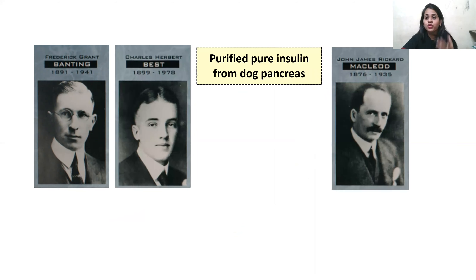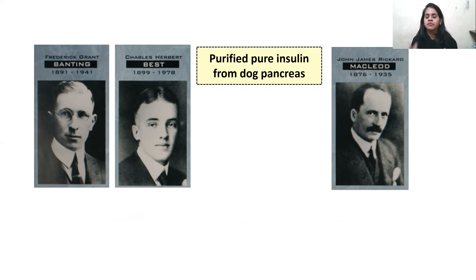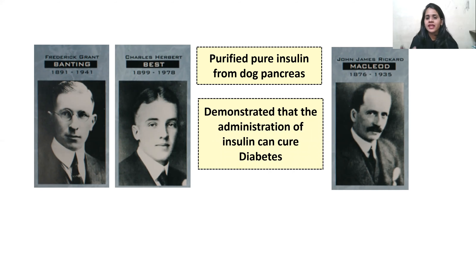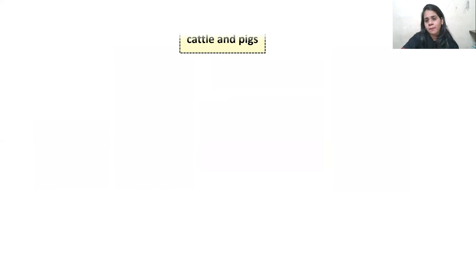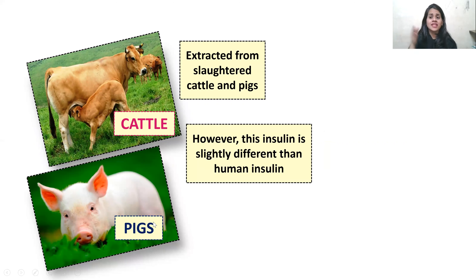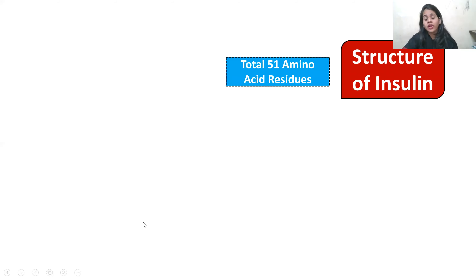Banting, Best, and Macleod were the ones who purified insulin from dog pancreas. These scientists attempted to remove pure insulin from dog pancreas, and they administered this insulin to diabetes patients. People also extracted insulin from slaughtered cats and pigs, but this insulin was slightly different from human insulin. It turned out these insulins did not match human insulin and could not be used to treat diabetes mellitus in humans.